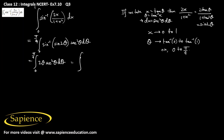Here we have to use integration by parts. We apply the ILATE rule to choose the first and second functions: the algebraic function 2θ is chosen as the first function, and sec²θ, the trigonometric function, is chosen as the second function.